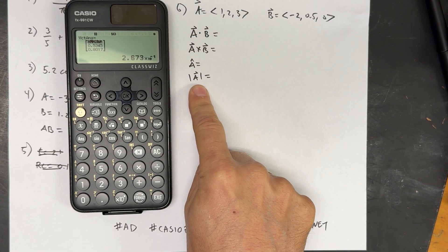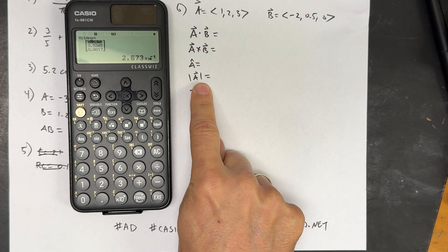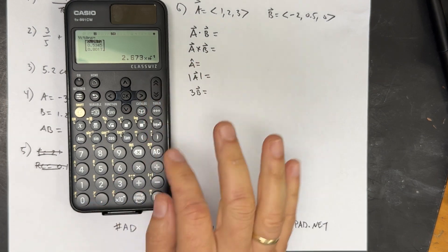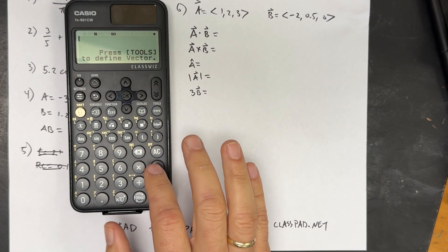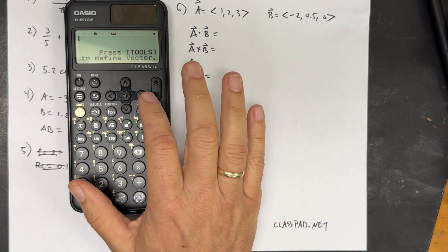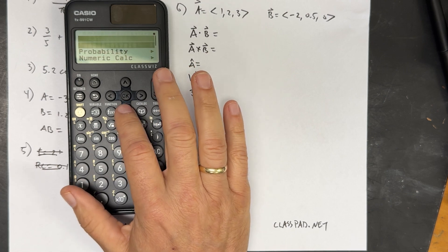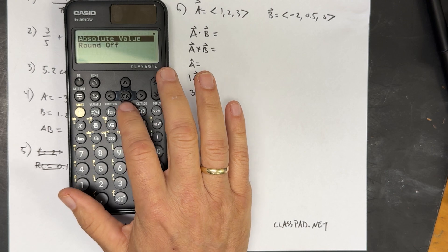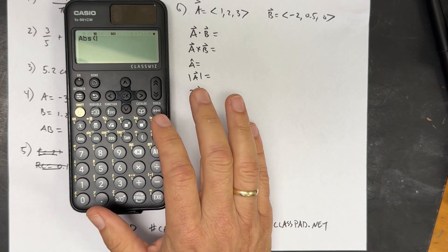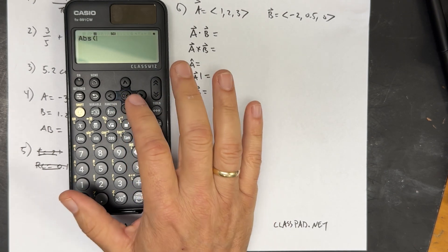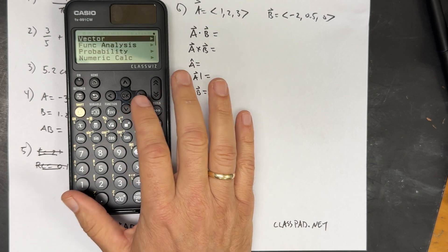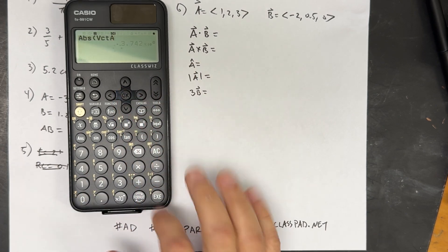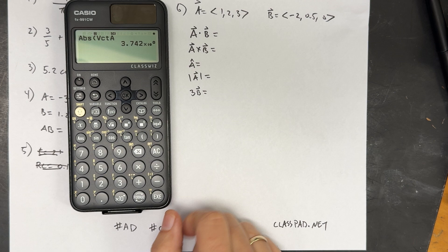What about the absolute value of A, or the magnitude of A? That one I did have a little trouble with. I didn't know how to do it right away. So you go over to absolute value, numerical calculation, absolute value. And then I'm going to do the vector A. Because it's not the absolute value, but it looks like that. Execute. There's the magnitude of vector A.